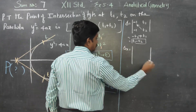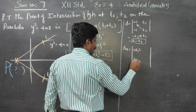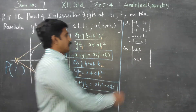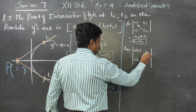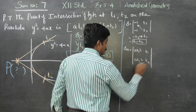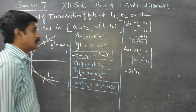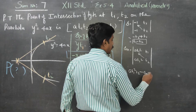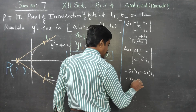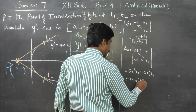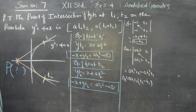For delta x, we replace the x-coefficients with the right-hand side values aT1² and aT2², keeping y-coefficients T1 and T2. Computing: right-hand side minus left-hand side gives aT1²T2 - aT2²T1. Taking out common factors a, T1, and T2, the balance is T1 - T2. So delta x = aT1T2(T1 - T2).